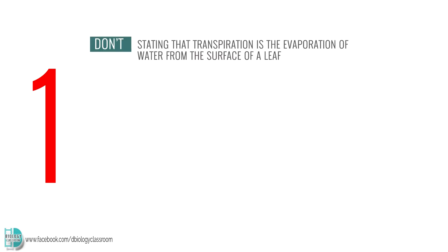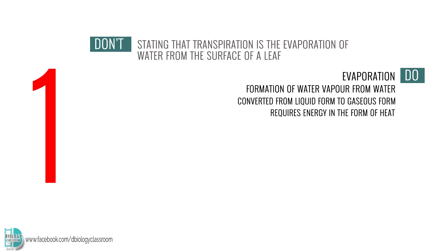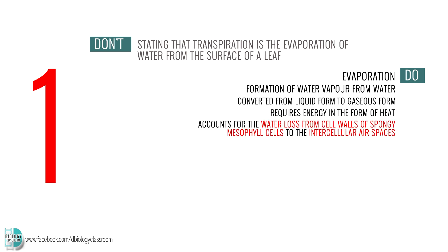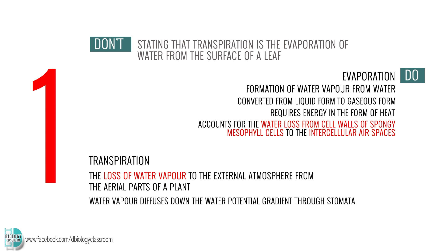Number 1: stating that transpiration is the evaporation of water from the surface of a leaf. Evaporation is the formation of water vapor from water — it is converted from liquid form to gaseous form, requiring energy in the form of heat. In a plant, it accounts for the water loss from cell walls of spongy mesophyll cells to the intercellular air spaces. Transpiration, on the other hand, is the loss of water vapor to the external atmosphere from the aerial parts of a plant. Water vapor diffuses down the water potential gradient through stomata.